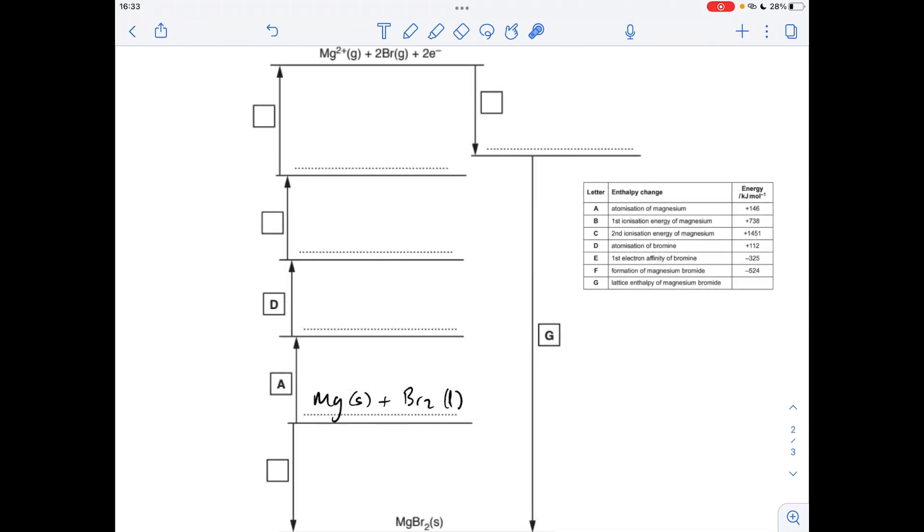Moving on to the Born-Haber cycle, I've put the elements in straight away, they would live on that line there. Just remember bromine's a liquid under standard conditions. So this here, elements to the compound, the solid ionic lattice, that's the enthalpy change of formation, which is F.